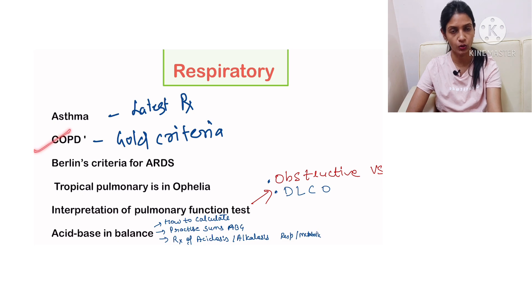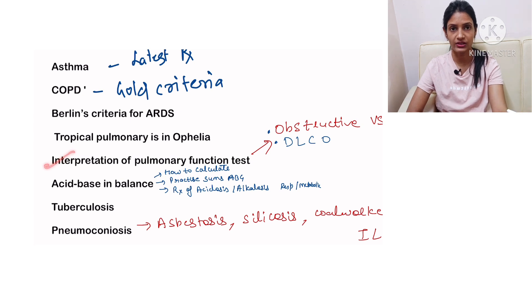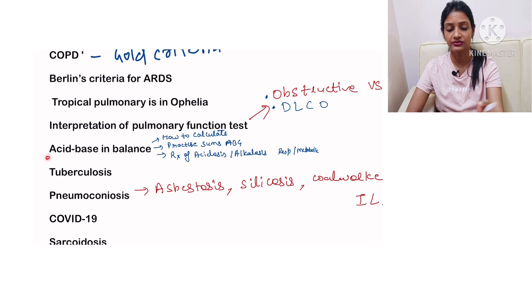In COPD you must be knowing the GOLD criteria, Berlin's criteria for ARDS, tropical pulmonary eosinophilia, interpretation of pulmonary function test. You must be knowing obstructive versus restrictive, then DLCO, acid-base imbalance. It is very very important.